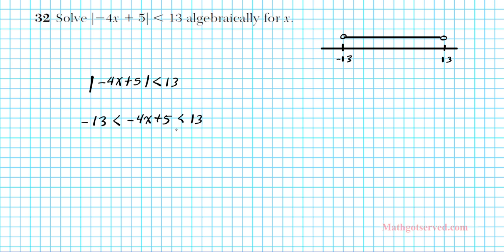This is two equations in one. We're going to solve them simultaneously. The goal is to get x isolated in the middle. So what we're going to do is get rid of the 5 first. We're going to subtract 5 from all three sides of our inequality. That yields negative 18 is less than negative 4x is less than 8.